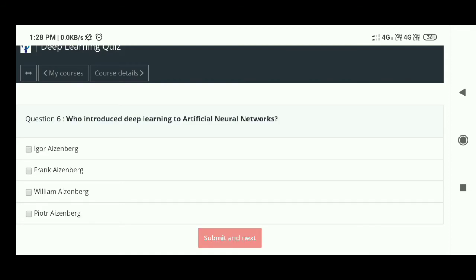Sixth question: Who introduced deep learning to artificial neural networks? The answer is option A. Seventh question: What is DNN? The answer is - deep neural networks.